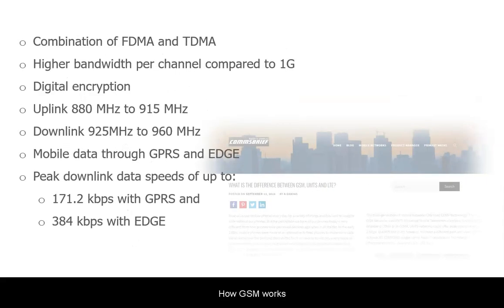Let's now have a quick look at how GSM works. GSM networks use the combination of two radio access techniques: FDMA, Frequency Division Multiple Access, and TDMA, Time Division Multiple Access. Radio access is that part of the network which propagates all those signals that connect you and me to the mobile network.